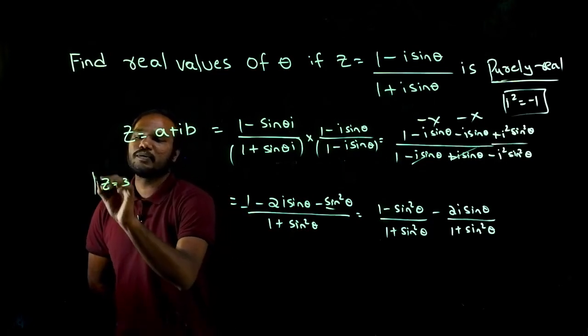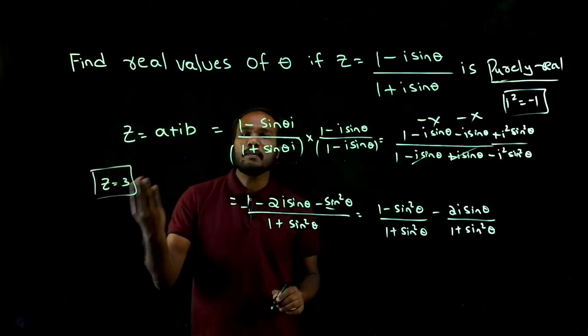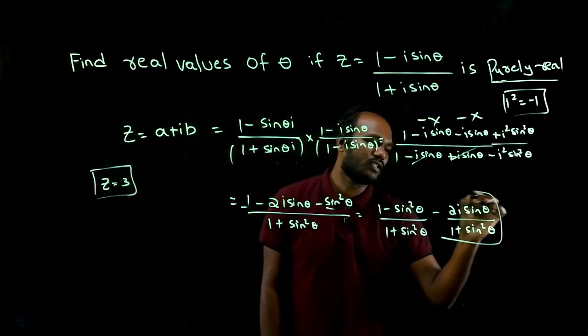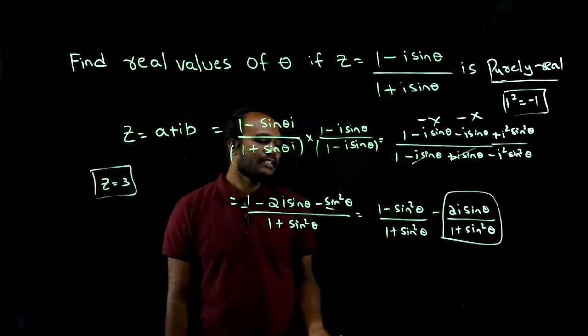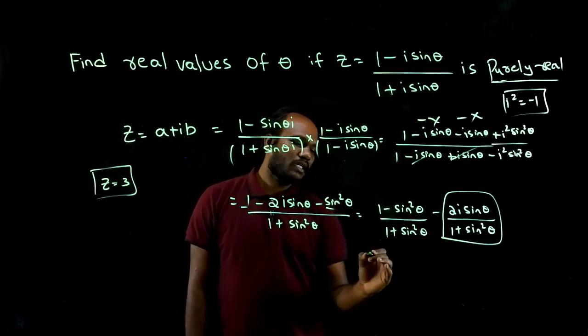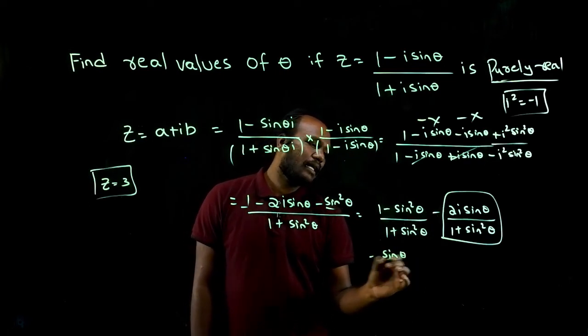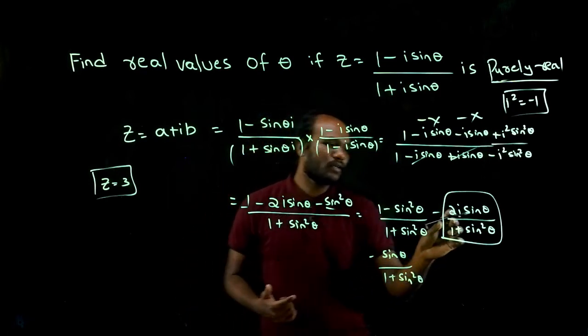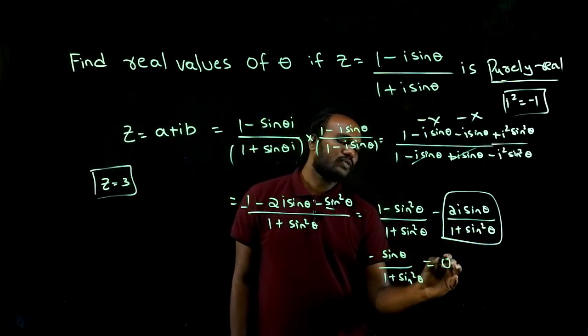Purely real means there will be no imaginary number. Imaginary number equal to zero. What is the imaginary number in this one? Except i, everything is imaginary. So I have to consider minus sine theta divided by one plus sine square theta. This is the imaginary component of this. This should be equal to zero.